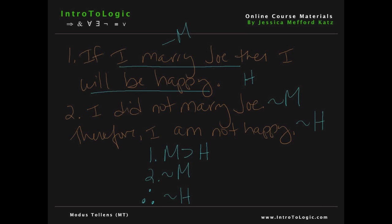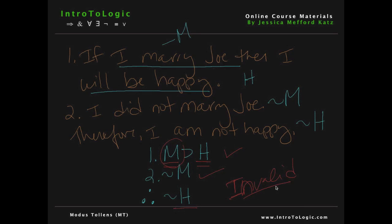Now recall that modus tollens says that if we have a conditional — which we do in our first premise — and we have the negation of the consequent, which would be not H, then we can derive the negation of the antecedent, which would be not M. But notice that we have a conditional and the negation of the antecedent, not M, as our second premise, and from those two premises we conclude the negation of the consequent, not H. This is actually an invalid form of reasoning — a fallacy that we call denying the antecedent.